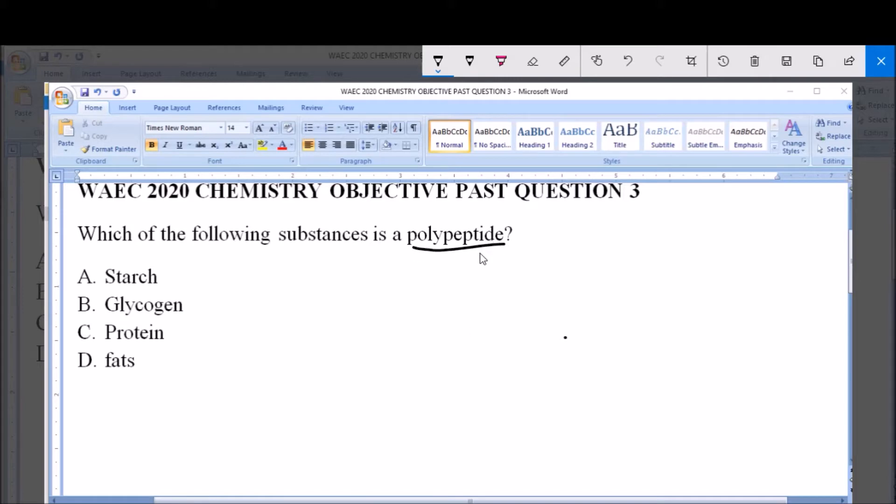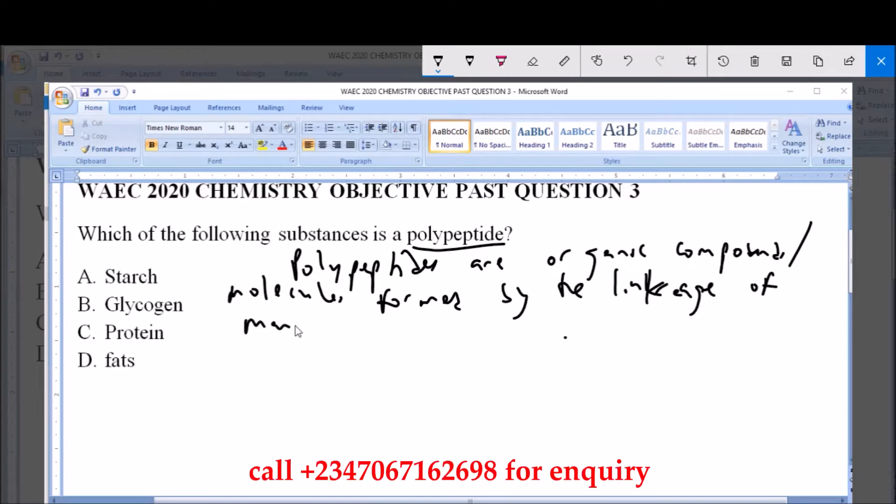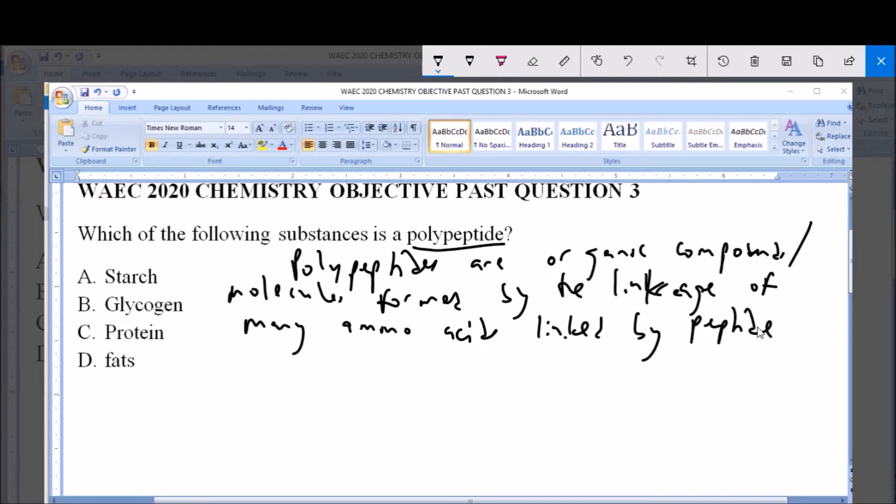What is a polypeptide? Now polypeptides are organic compounds or molecules formed by the linkage of many amino acids linked by peptide bonds.